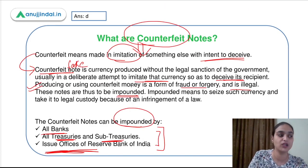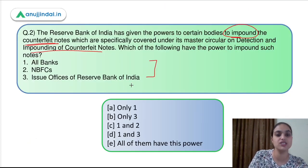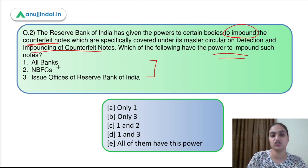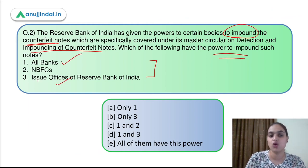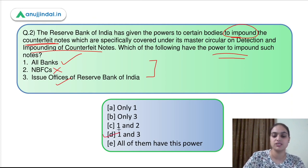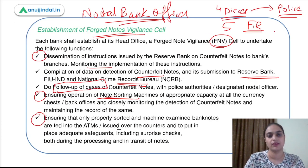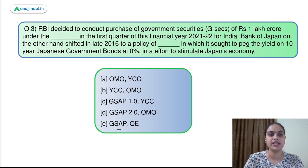Coming back to Question 2, which asked about the bodies with the power to impound counterfeit notes: banks and RBI issue offices have this power but NBFCs do not. The answer is option D.